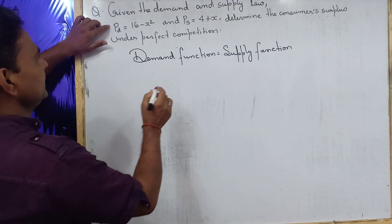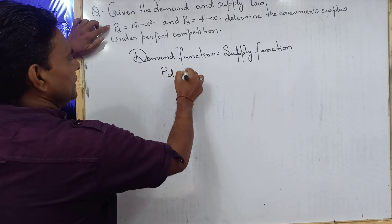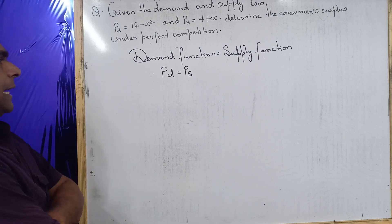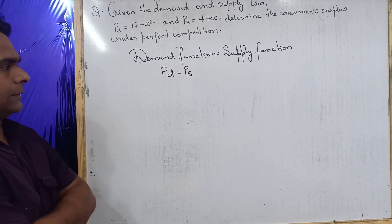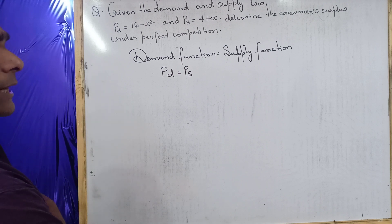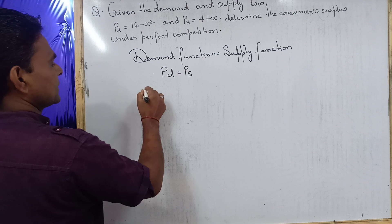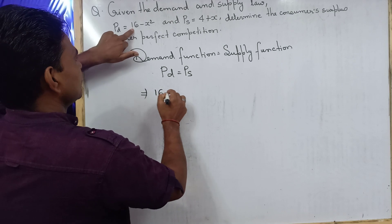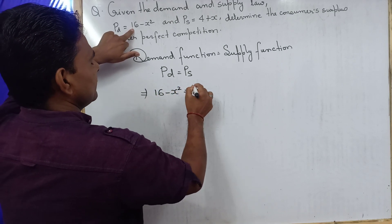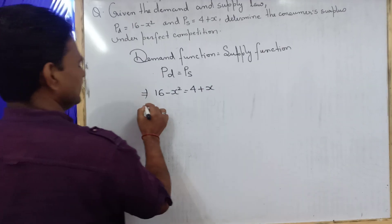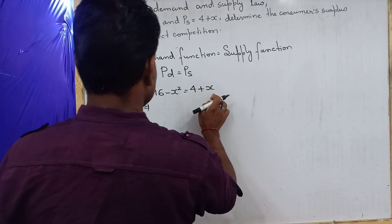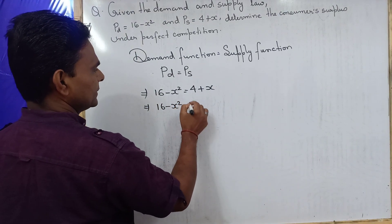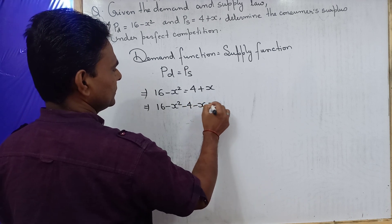Now we are equating TD equal to TS — that means demand function equal to supply function — in order to derive the value of x, that means quantity. Substituting the given values: 16 minus x squared equals 4 plus x. Shifting 4 plus x to the LHS side gives us 16 minus x squared minus 4 minus x equal to 0.